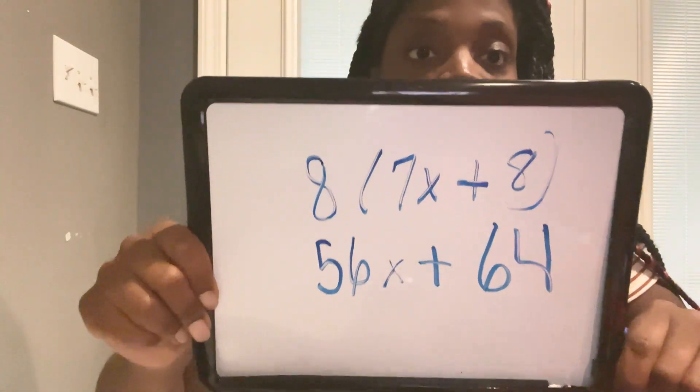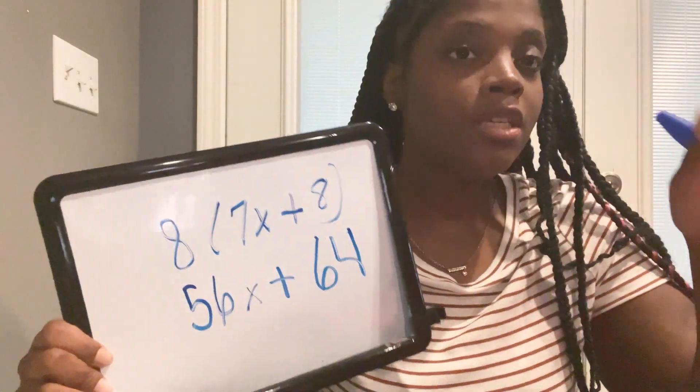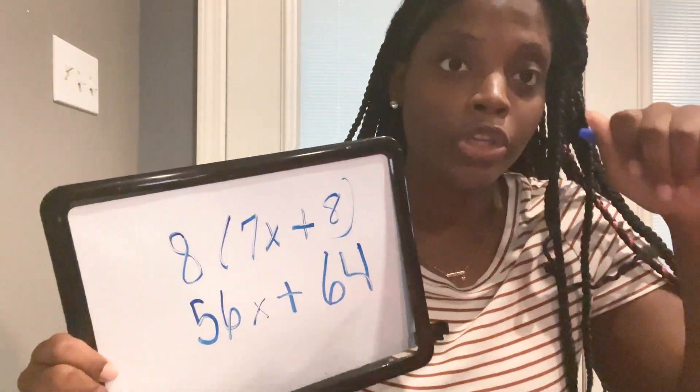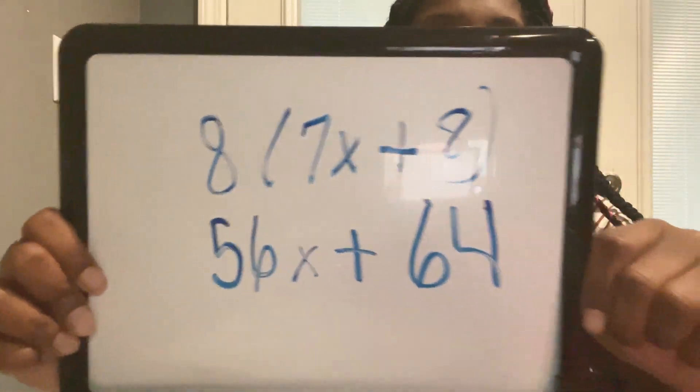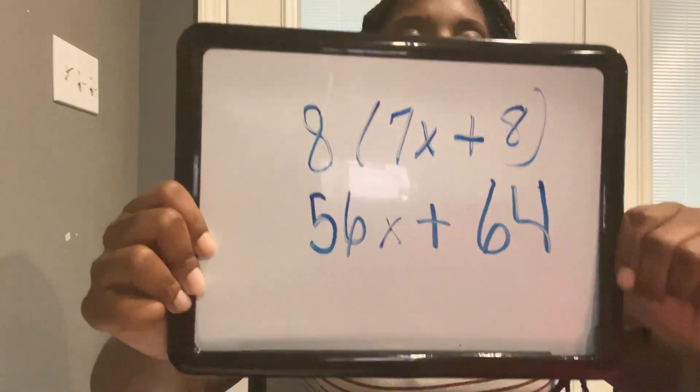Pay attention to certain terms when you take the exam — that's how they try to trick you. If they say simplify, that's what you do, and the answer is 56x plus 64. That's all I got for today. Subscribe to my channel, hit me up in the comment section if you have any questions. Have a good day, guys!